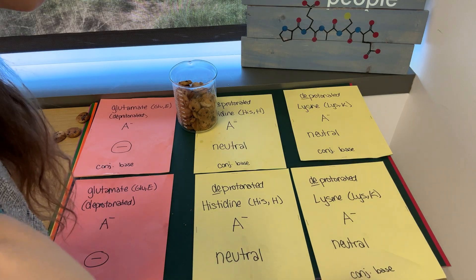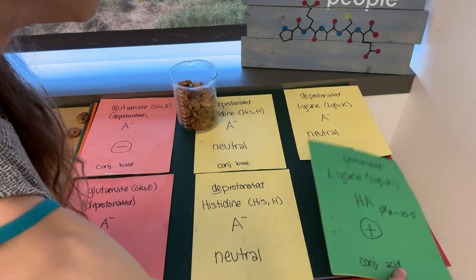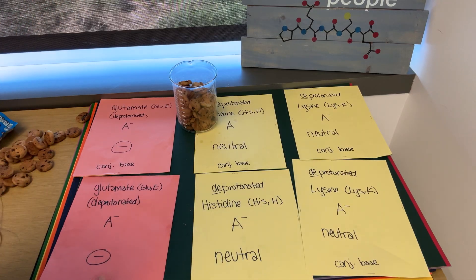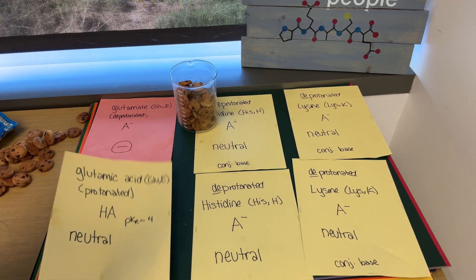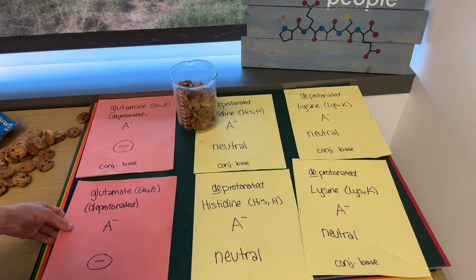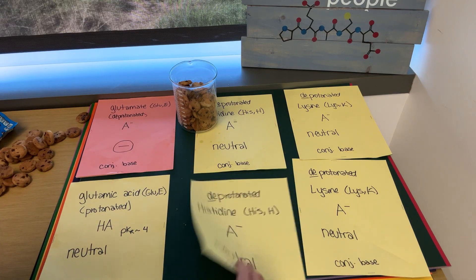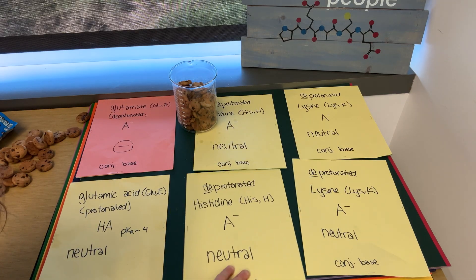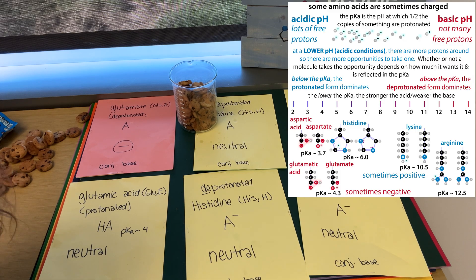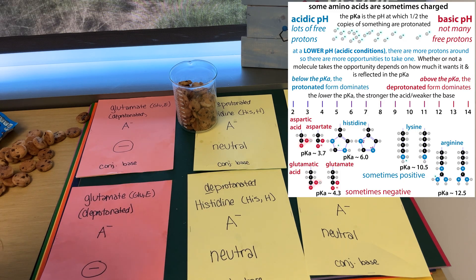The basic amino acids are going to be neutral, or they're going to be positively charged. The acidic amino acids are going to be negatively charged, or they're going to be neutral. So, negative charge to neutral, neutral to positive. The basic amino acids — you'd either find them in the neutral or the positive. The acidic are going to be the negative, or the neutral.